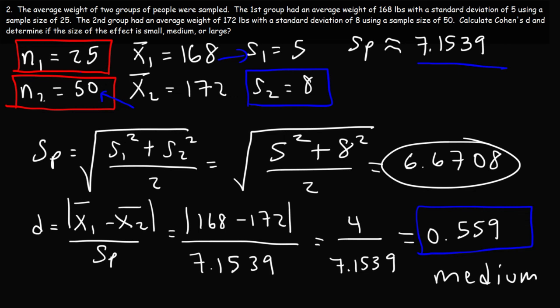So that's the size of the effect, and that's how you can use Cohen's D — how to calculate it, and then based on its value, determine if the size of the effect is small, medium, or large.